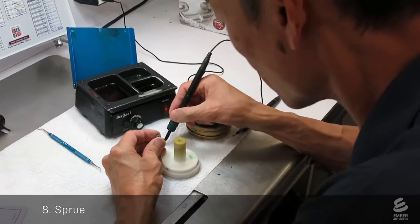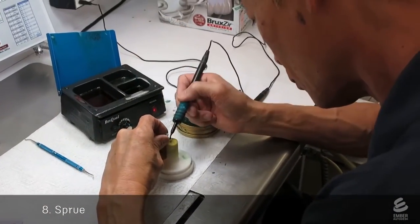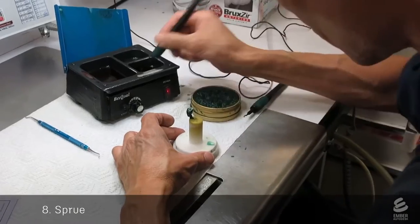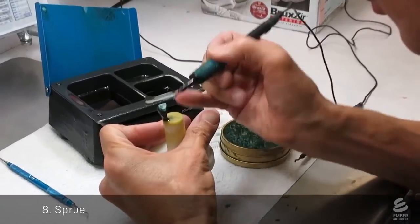Another technician sprues the crown. They use wax to attach it to a stem. This will create a passage for metal to flow into the crown during the casting process.